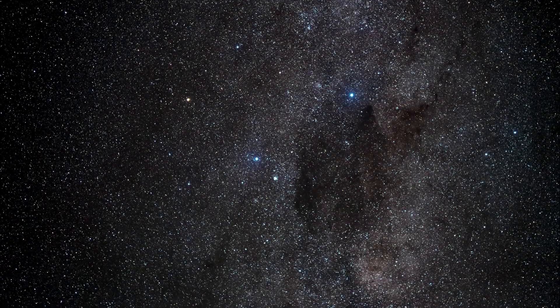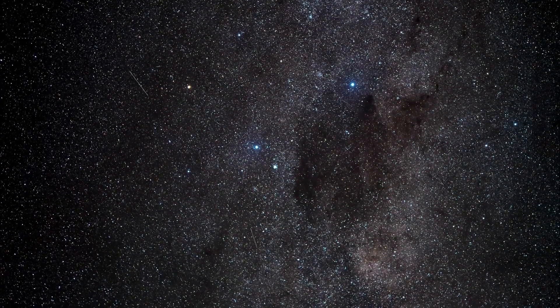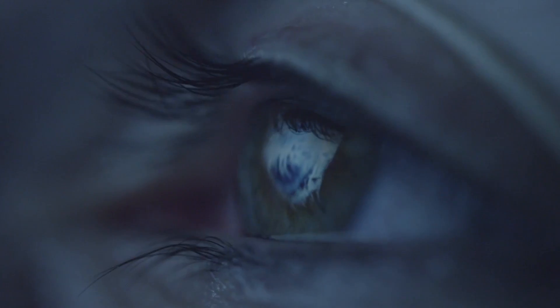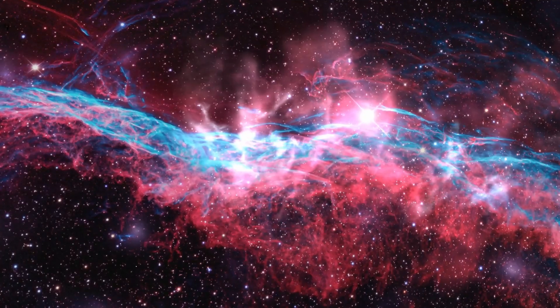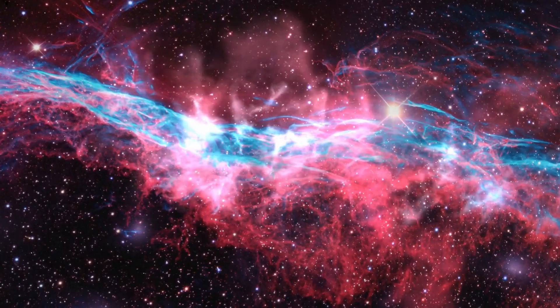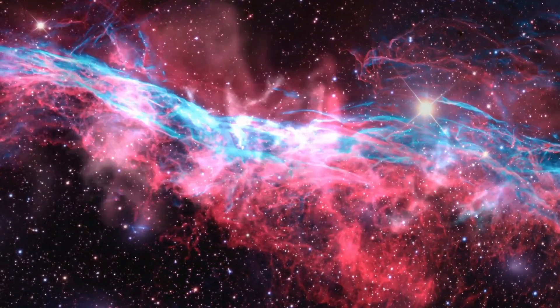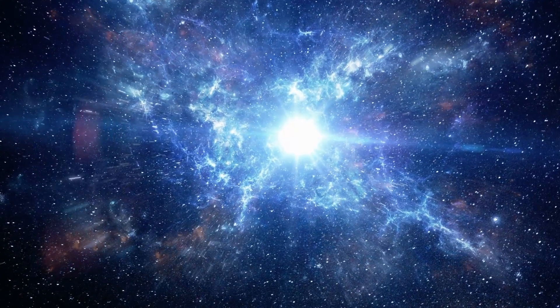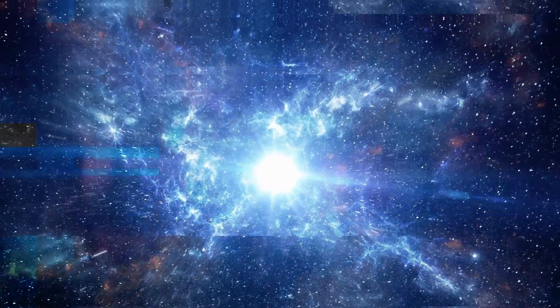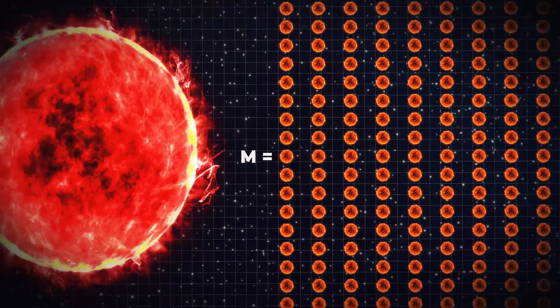Each one of the estimated 200 billion trillion stars in the observable universe began its life in the same way, as a diffused cloud of gas and dust called a nebula. Nebulae like these can span hundreds of light years and contain the mass of millions of suns.